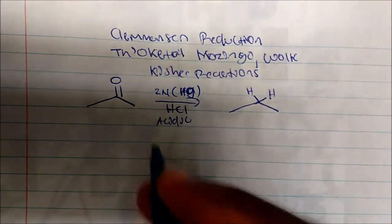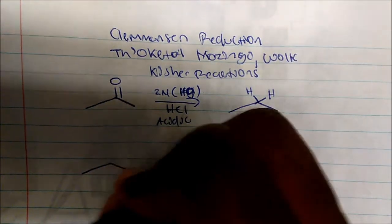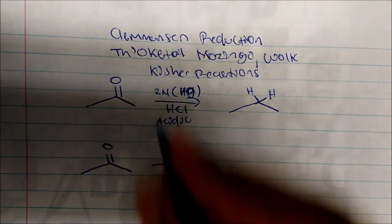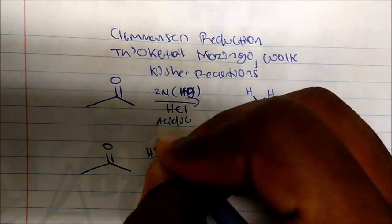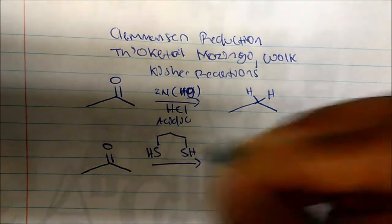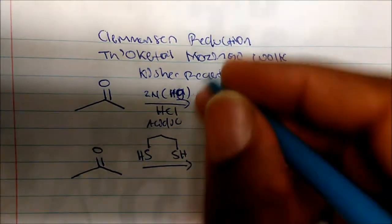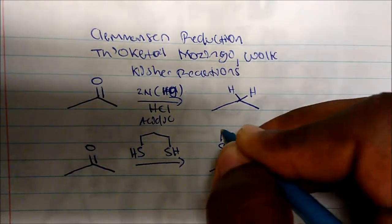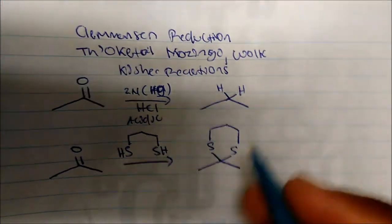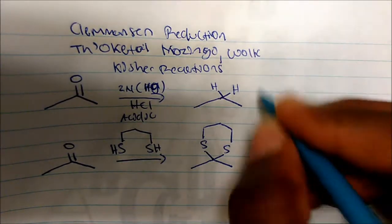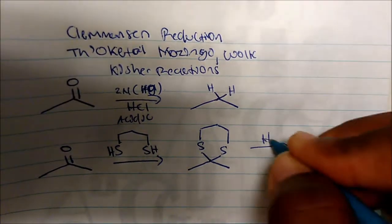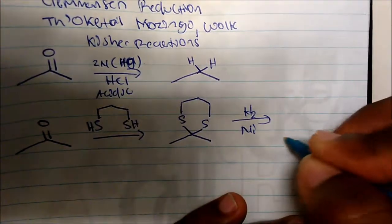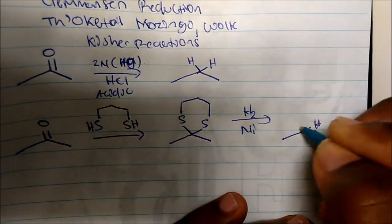With the Thioketal-Mozingo reaction, I take a ketone, and I use a dithiol — this molecule is very common. What this does is that I form an intermediate, and then I use a catalyst, which is usually hydrogen gas and nickel. And once I apply hydrogen gas and nickel, I get my alkane.